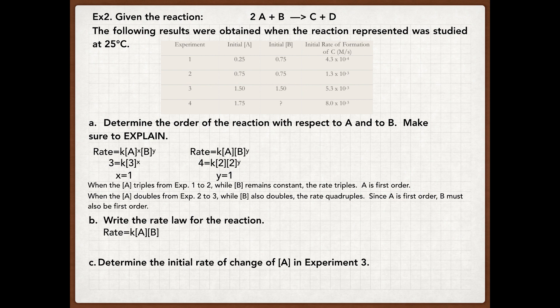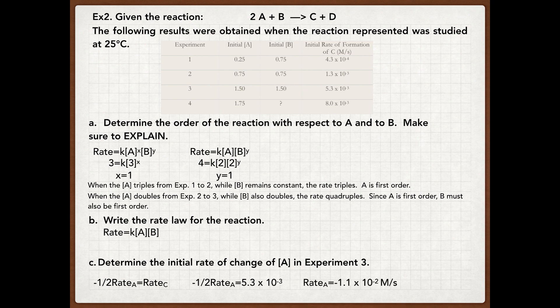Next, determine the initial rate of change of A in experiment three. Experiment three gives the initial rate of formation of C, so we use stoichiometry from the previous lesson: negative one-half the rate of A equals the rate of C. Since the rate of C is 5.3×10⁻³, I multiply both sides by negative two, giving the rate of A as negative 1.1×10⁻² molar per second. It makes sense that the rate is negative since A is a reactant that is disappearing.